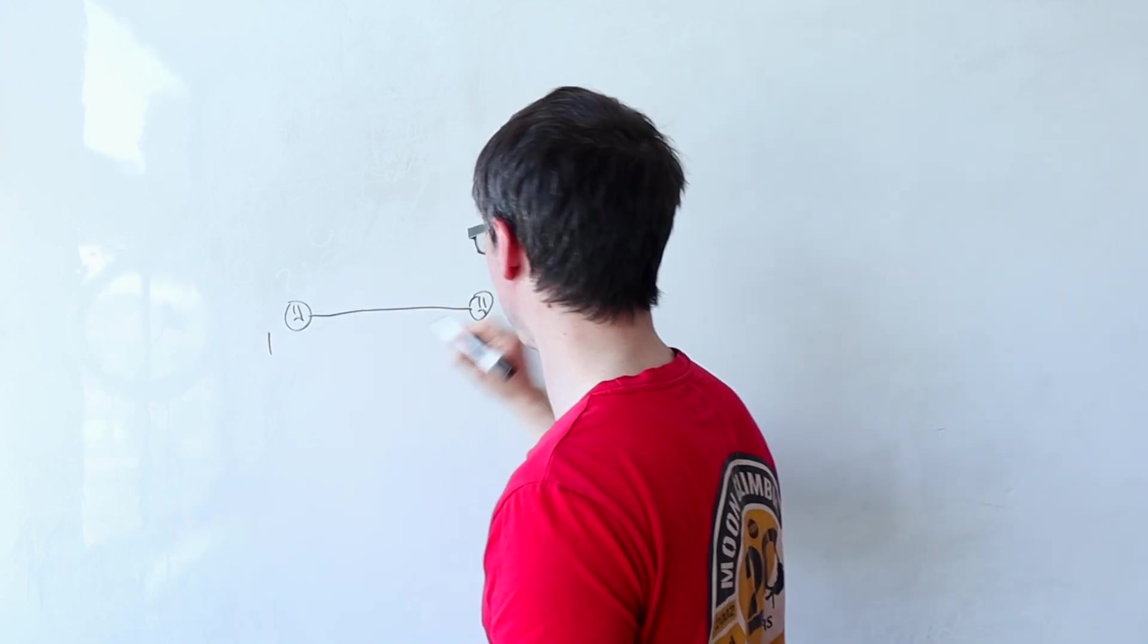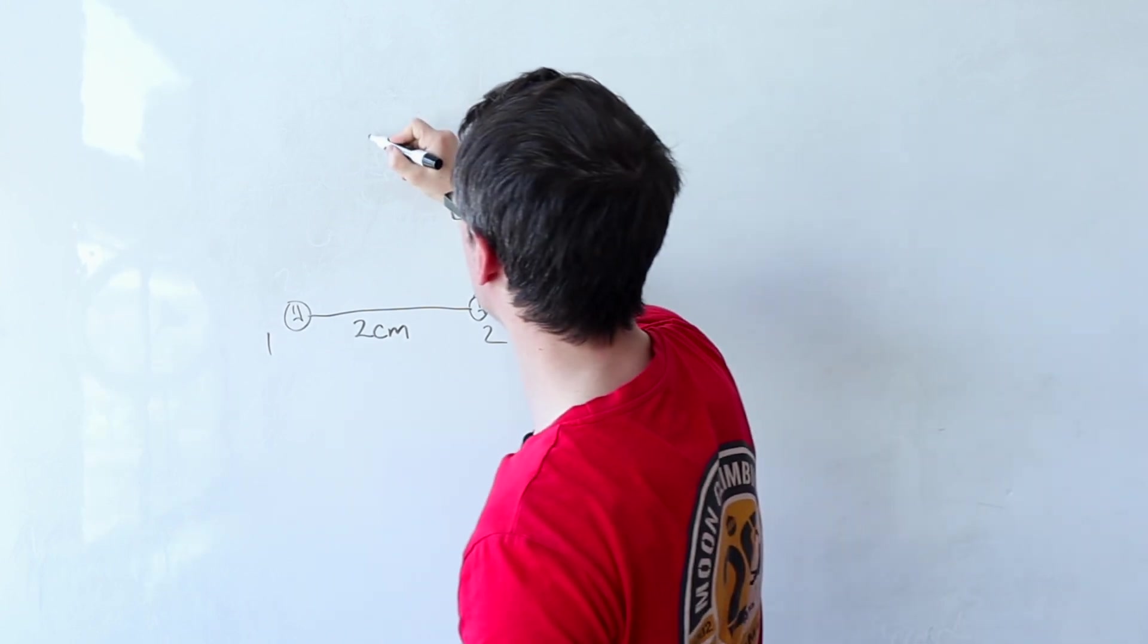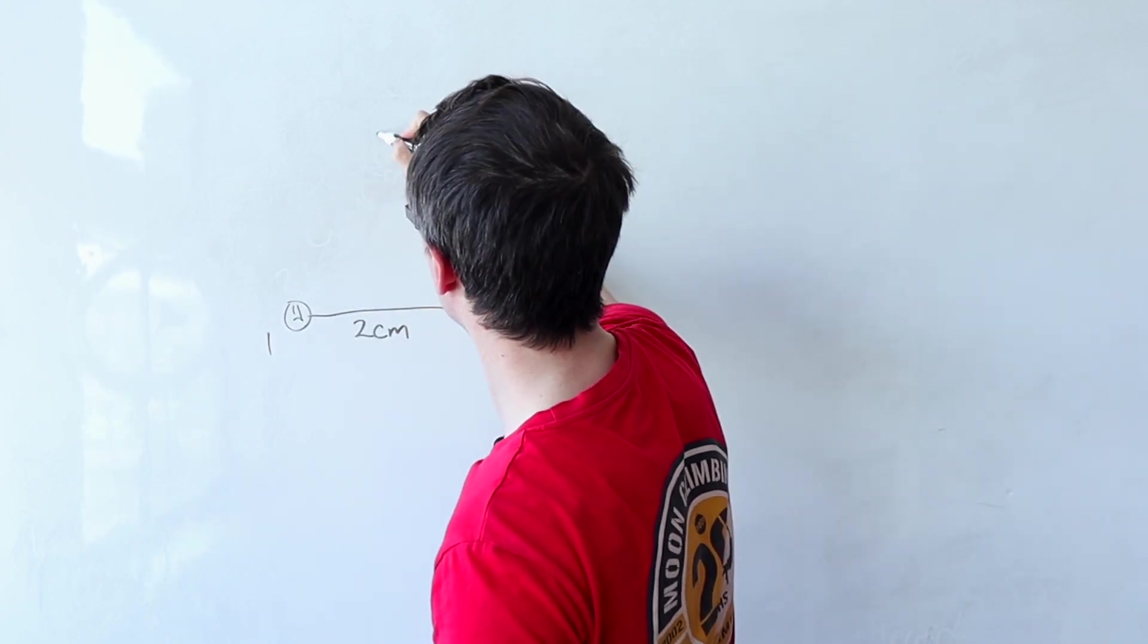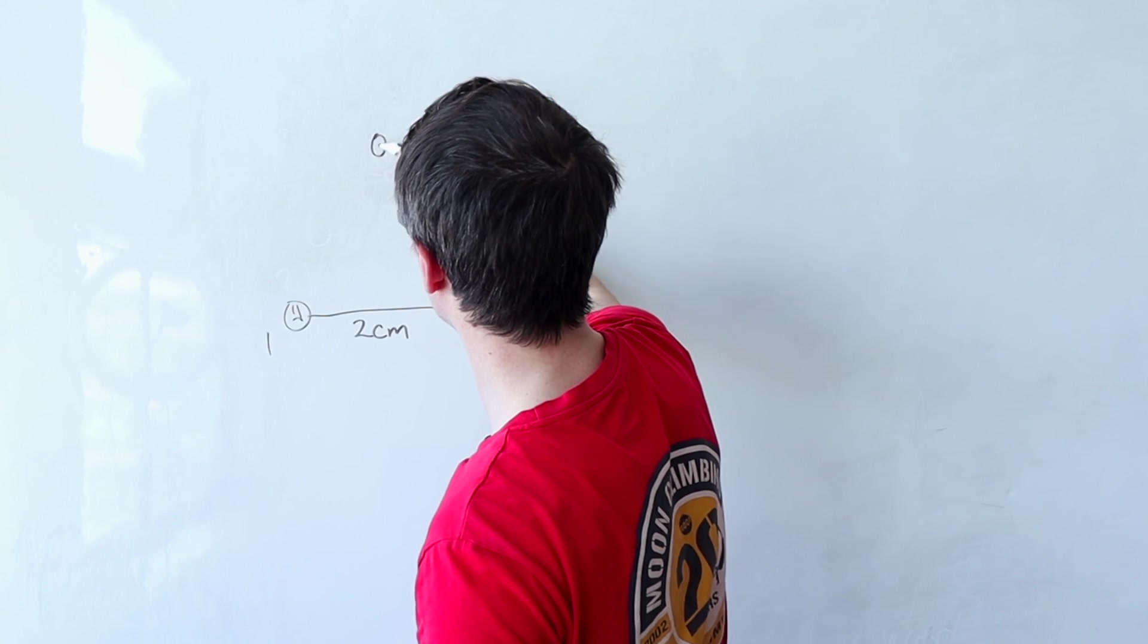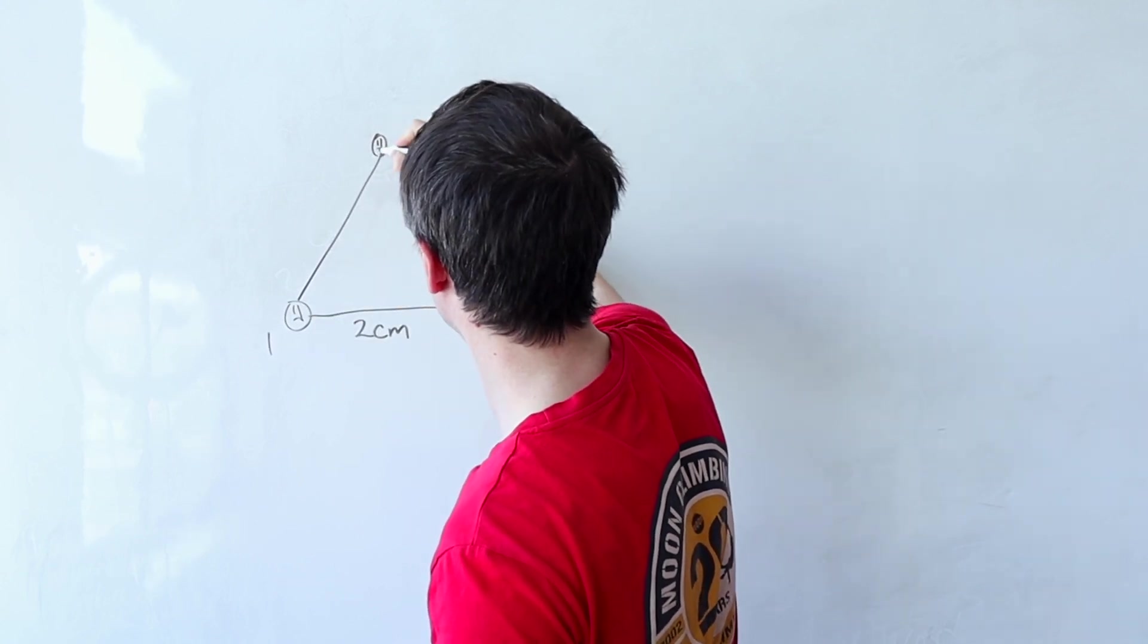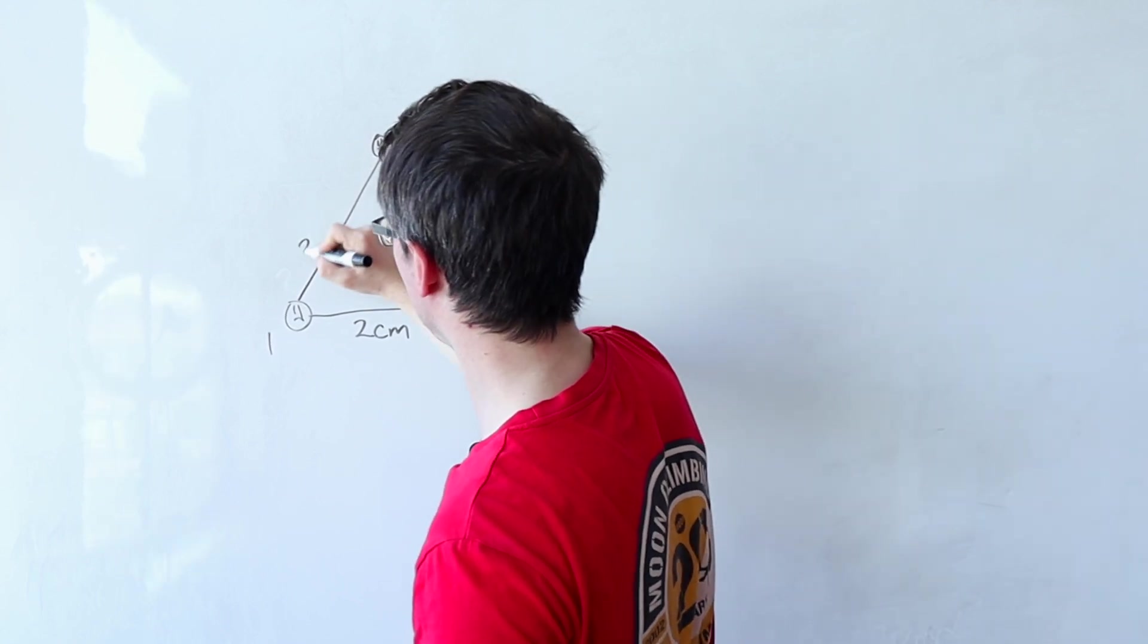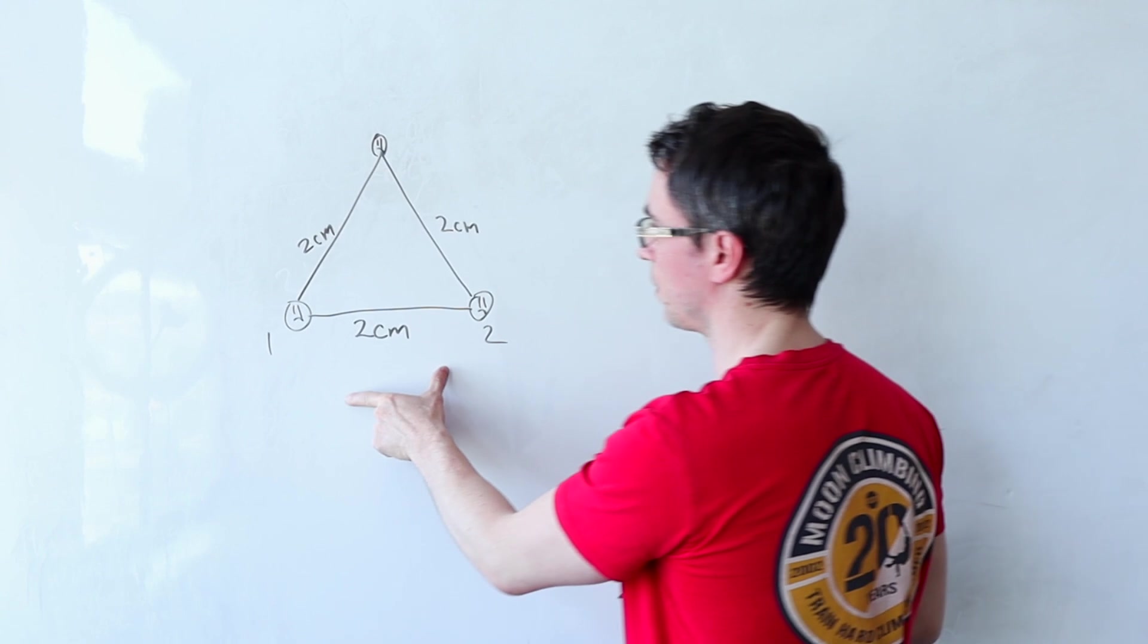Let's say that they're separated by two centimeters. Then let's add a third one which is also around two centimeters away forming an equilateral triangle. So this here is two centimeters and this one here is also two centimeters.